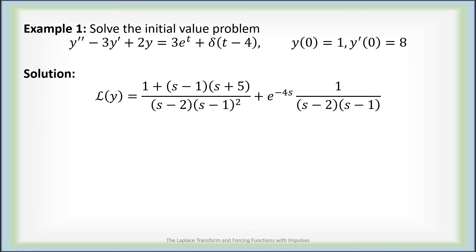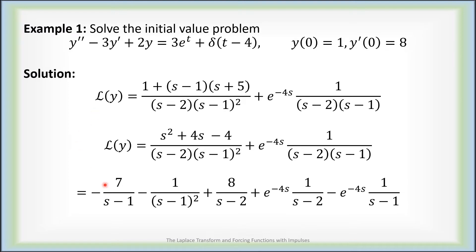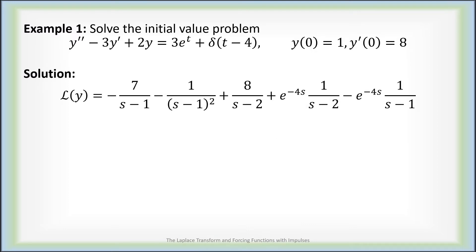If we expand and simplify the numerator of the first term, it's just s squared plus 4s minus 4. Applying partial fraction decomposition, we end up with negative 7 over (s minus 1) minus 1 over (s minus 1) squared plus 8 over (s minus 2). Factoring out the e to the minus 4s, that rational function decomposes as 1 over (s minus 2) minus 1 over (s minus 1). So here's how we've represented the Laplace transform of y after all partial fraction decomposition.